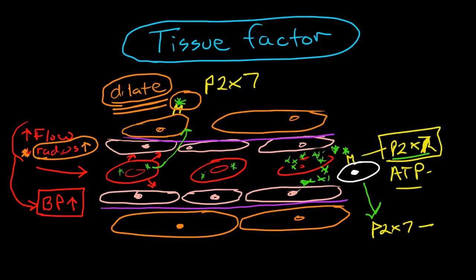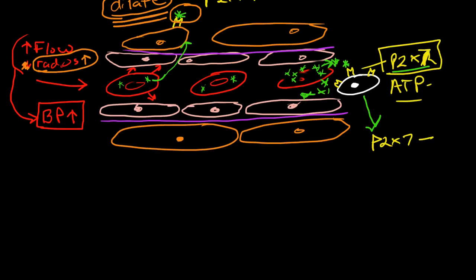So when the red blood cell lyses, ATP and all of its other contents get released. And the ATP just happens to hit a bunch of these P2X7 receptors. And when enough of them are activated, they initiate a response.